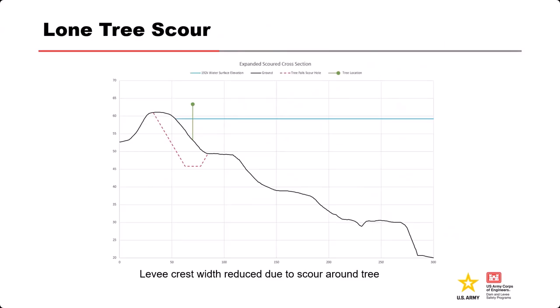Lone tree scour is a concern on some California levees. Because it can be close to the levee crest, lone tree scour can act quickly and unravel the levee rapidly. It could also be caused by a pole or bridge pier in or near the levee. Take those effects into account — there is some good guidance available on that.